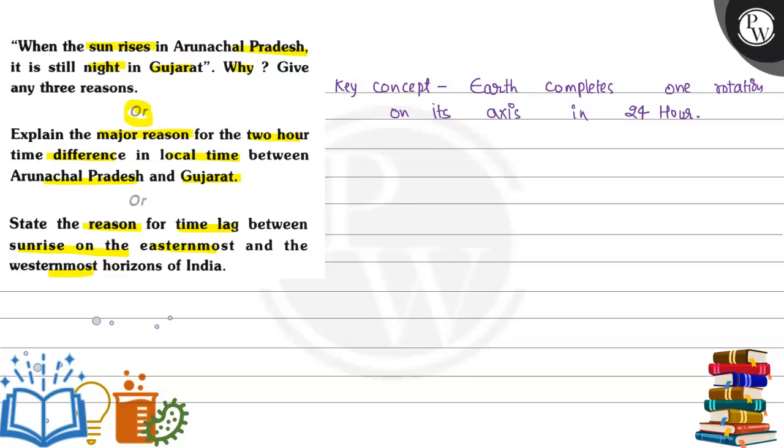Let's see the key concept. Earth completes one rotation on its axis in 24 hours. We are talking about rotation. For example, this is Earth and this is its axis, then we rotate it on the axis, and time taken is 24 hours.